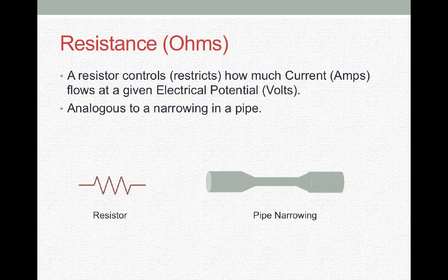Resistance is a resistor in a circuit controls or restricts how much current can be flowing through the circuit at a given potential or voltage. We can think about this like a narrowing in a pipe that slows the flow of water through a pipe. The resistor slows the flow of electrons through the circuit.